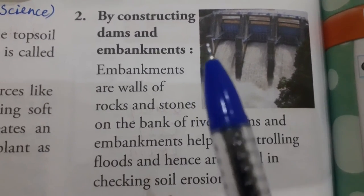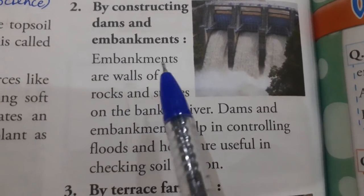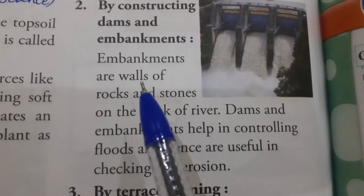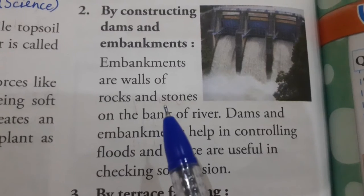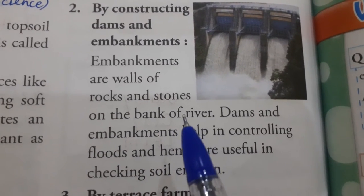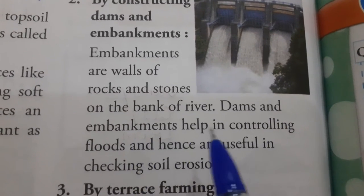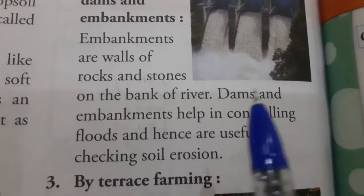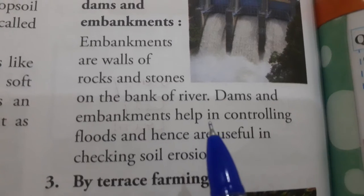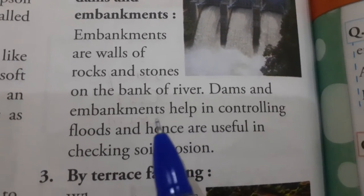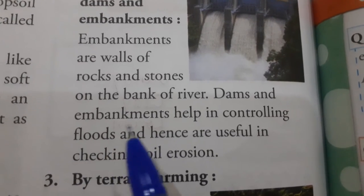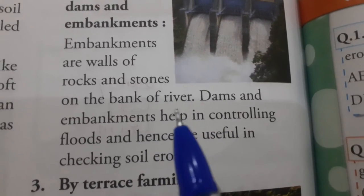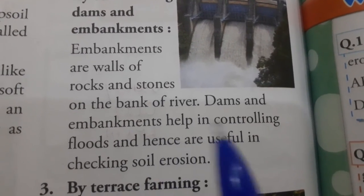Next method is by constructing dams and embankments. Embankments are the walls of rocks and stones on the bank of a river — patharon aur stones ki diwar bana di jaati hai river ki side ke upar, taaki paani bahut zyada flow na kare. Dams and embankments help in controlling floods and hence are useful in checking soil erosion. Agar baad nahi aayegi toh upar wali layer easily remove nahi hogi.